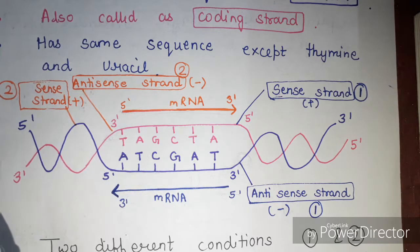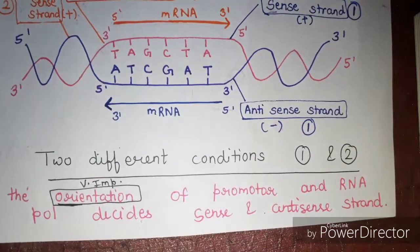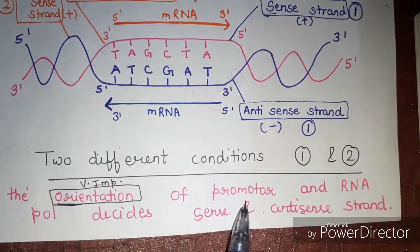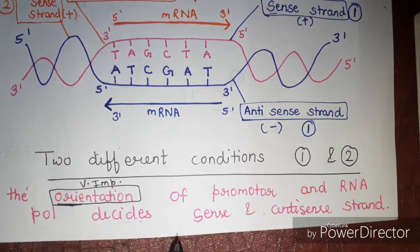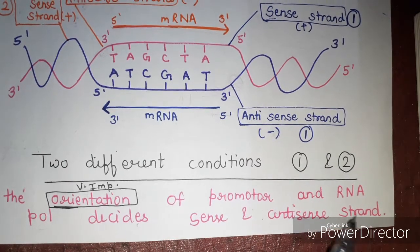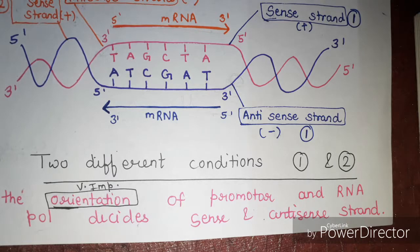That is the major difference between the sense and the antisense strand. Remember: the orientation of the promoter and RNA polymerase determines which strand is the sense strand and which is the antisense strand of the DNA. Thank you so much. If you like my video, please subscribe to my channel for further updates.